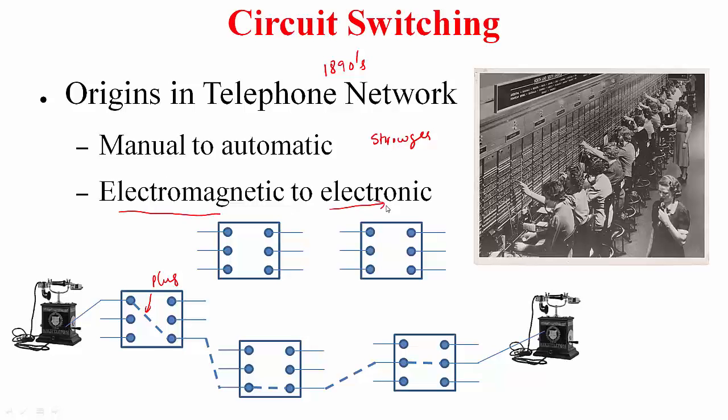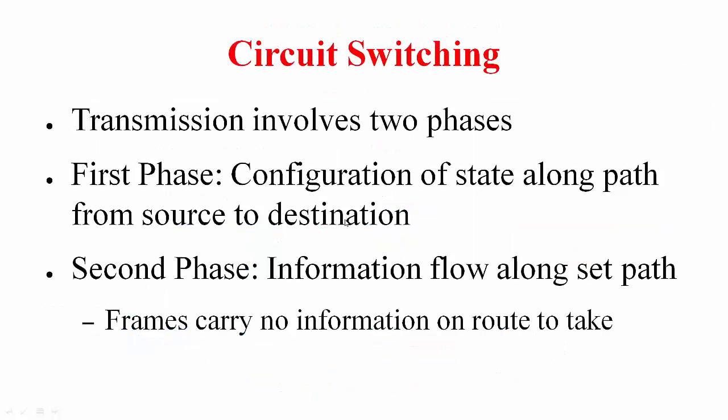Circuit switching involves two phases. In the first phase, basically you establish a path between the source and the destination, and in the second phase the actual information or data flows along the established path. Now this information that is flowing in the form of frames, they do not carry any information on route to take because that has already been established prior to the data flow itself.